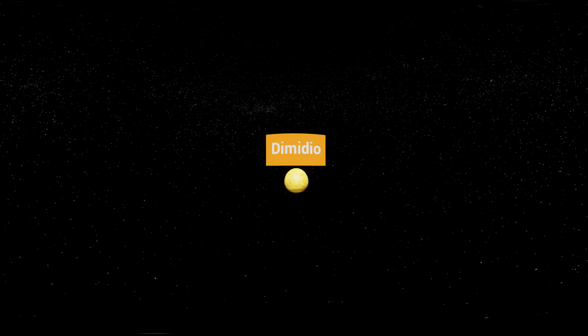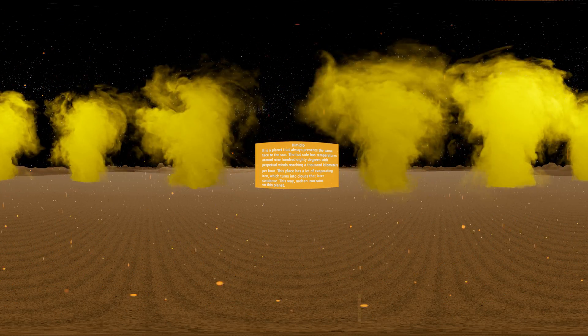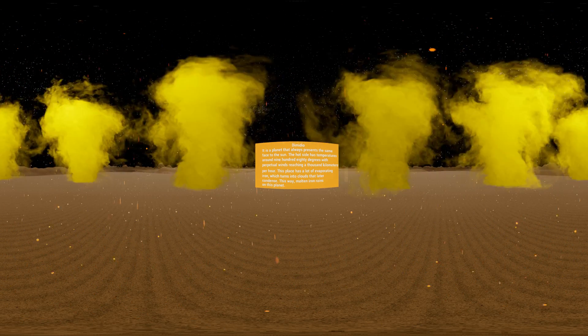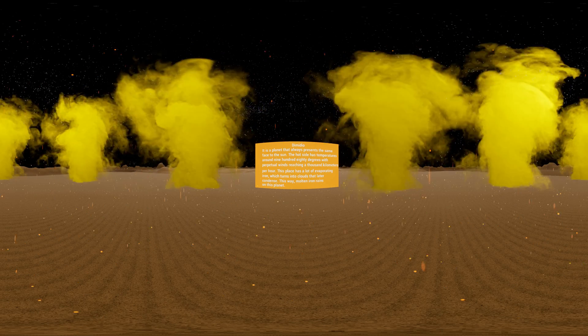DIMIDIO. It is a planet that always presents the same face to the sun. The hot side has temperatures around 980 degrees, with perpetual winds reaching 1,000 kilometers per hour. This place has a lot of evaporating iron, which turns into clouds that later condense. This way, molten iron rains on this planet.